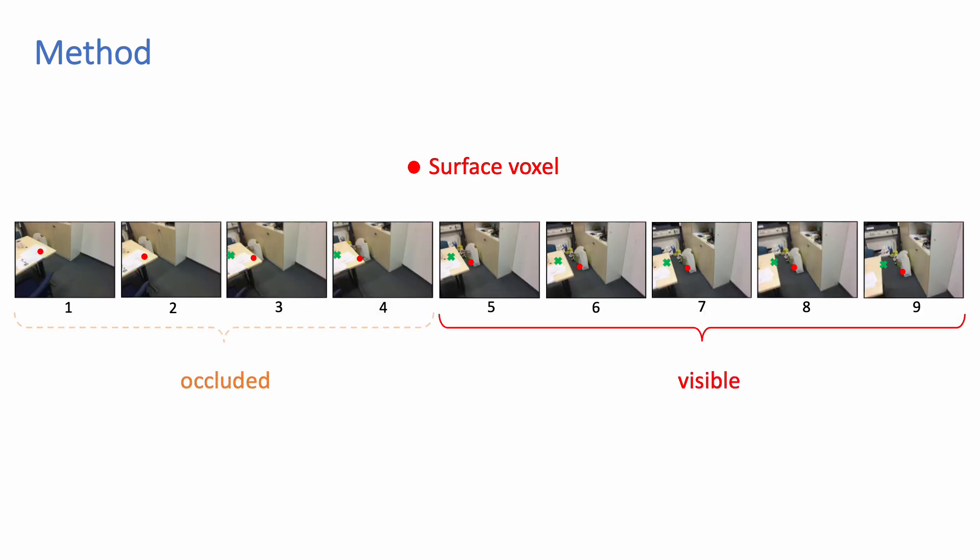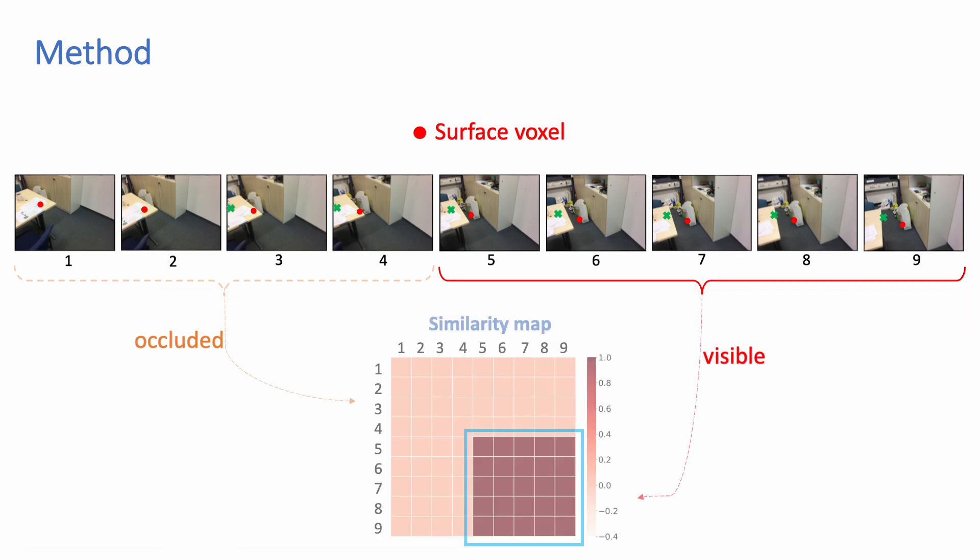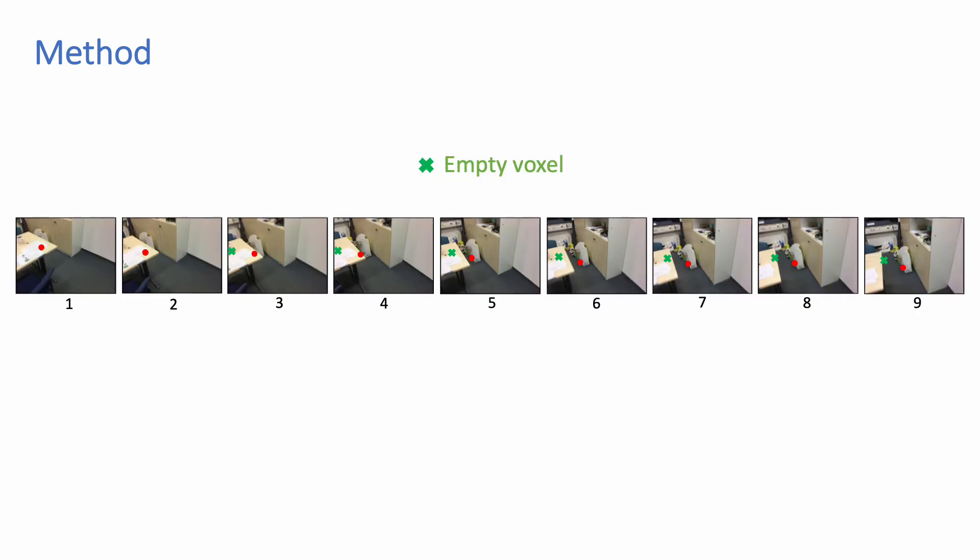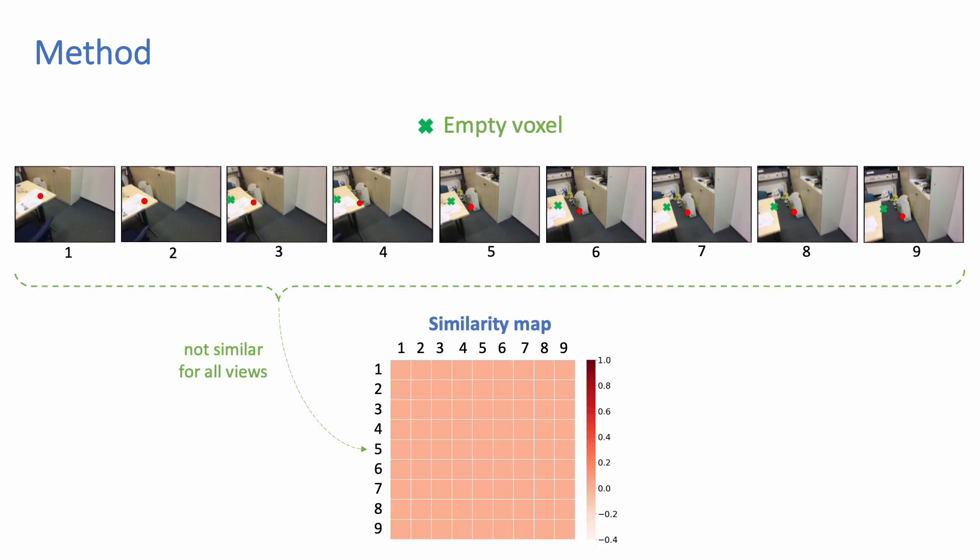Our key insight is that photometric consistency between features from different views should provide strong heuristics for view selection. Here the red dot is a surface voxel occupied by the backpack on the floor. It is only visible in the last five views. From the similarity map, we can find the features extracted from visible views have higher similarity with each other than those from invisible views. For the unoccupied empty voxel in the air, like the green cube in the images, the features from all the input views have low similarity value with each other.